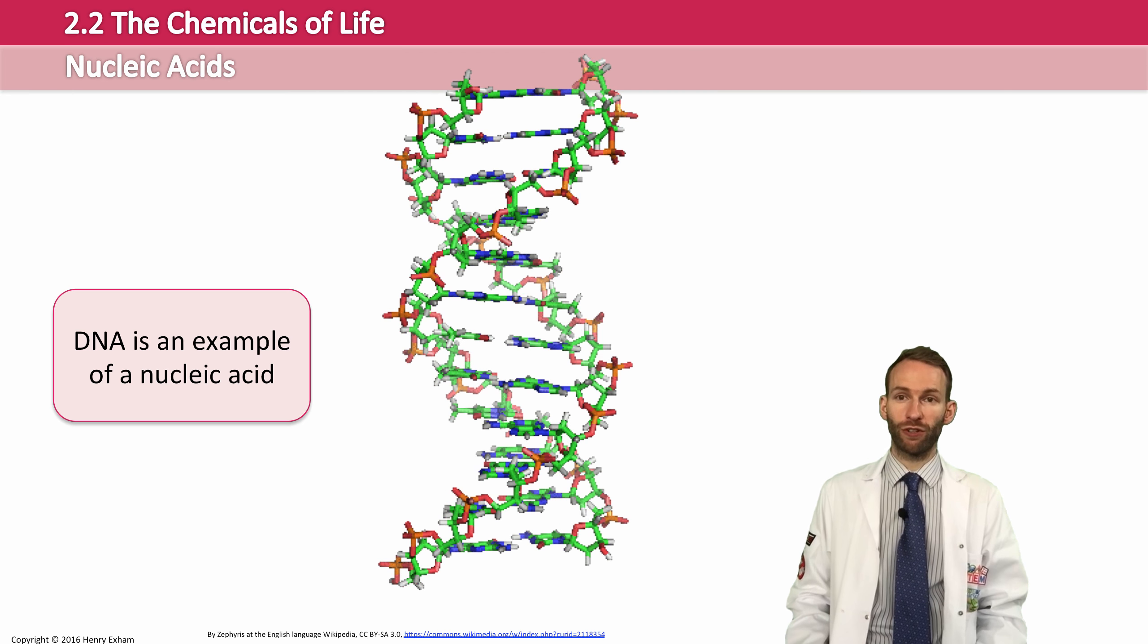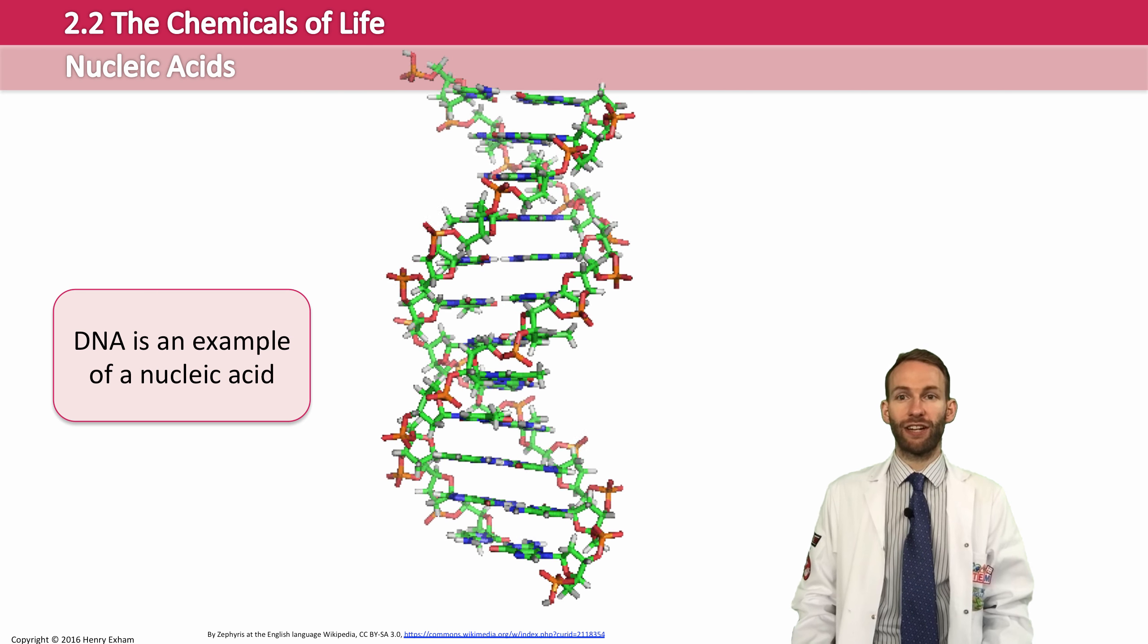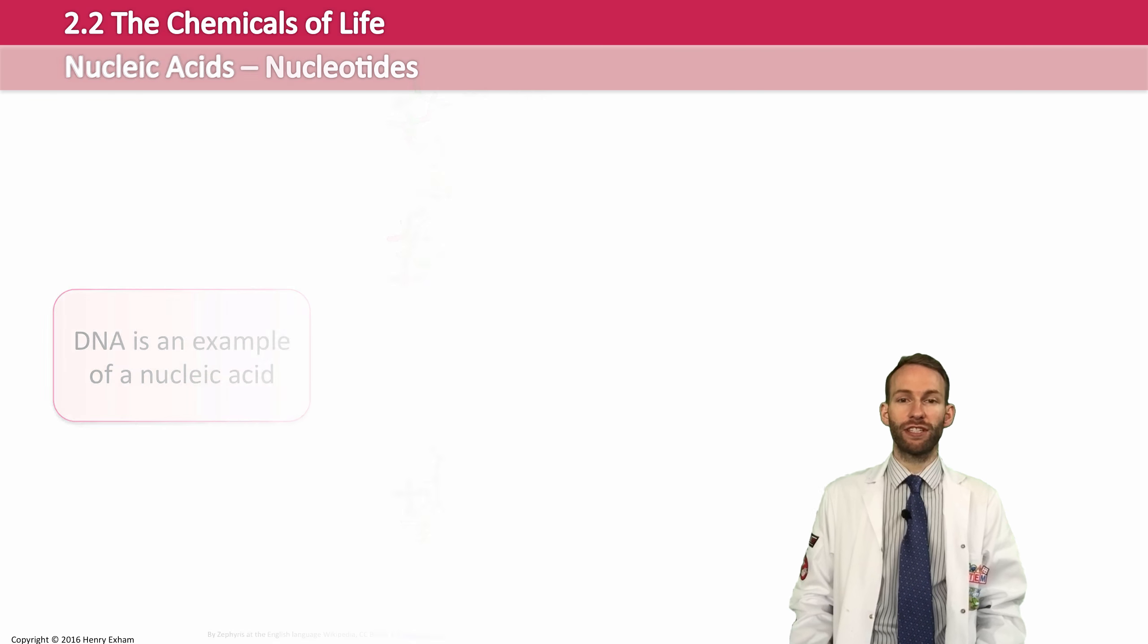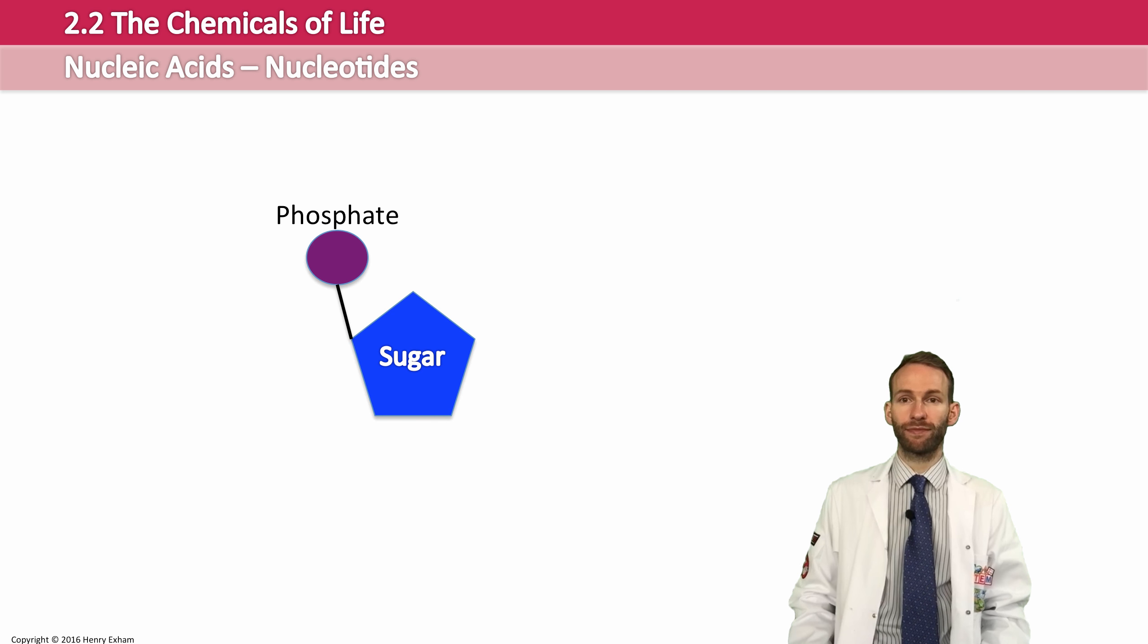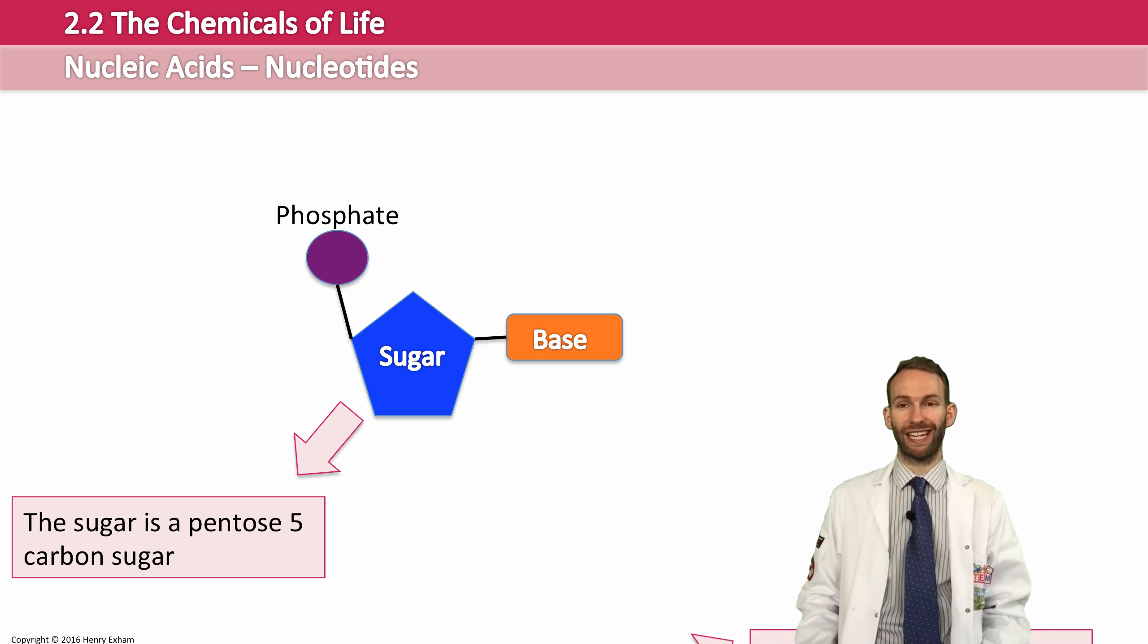Now, the final group of biological molecules that you're going to learn about in this section are nucleic acids. Nucleic acids are made up of nucleotides. A nucleotide has three parts to it: a phosphate group, a sugar which will be a pentose 5-carbon sugar, and a base, a nitrogenous base which contains nitrogen.